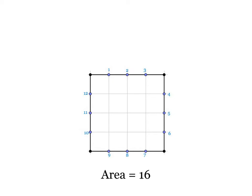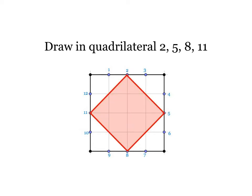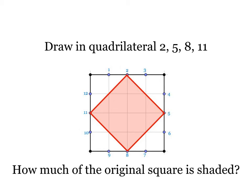Let's do something a little more interesting though. Let's draw in a quadrilateral. This one I'm gonna call it two five eight eleven because I'm just connecting those points two to five, five to eight, eight to eleven, eleven back to two. That defines my quadrilateral. And there's a question I can ask right away about this which is how much of the original square does this quadrilateral shade?